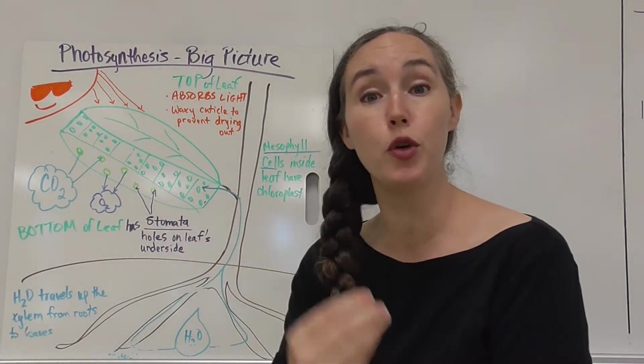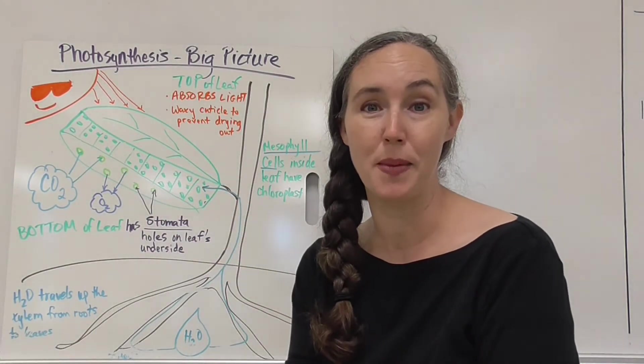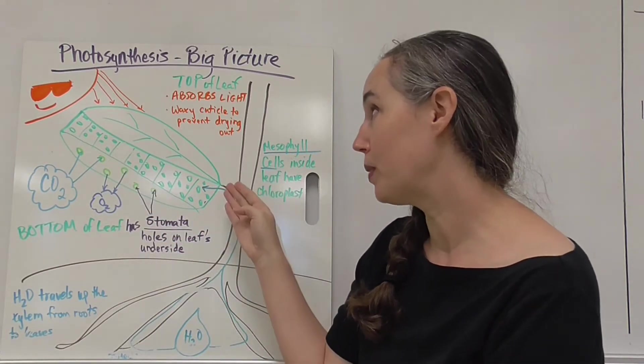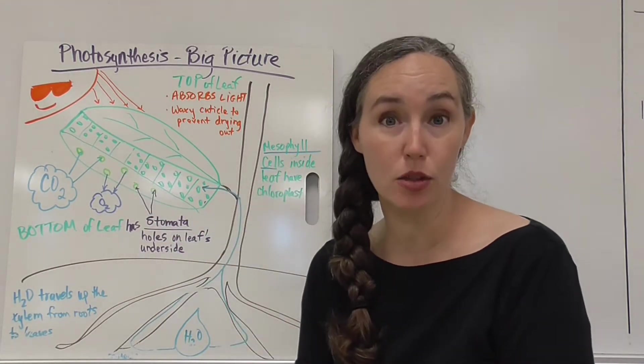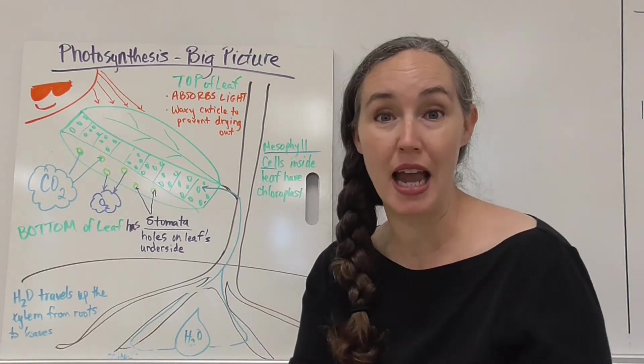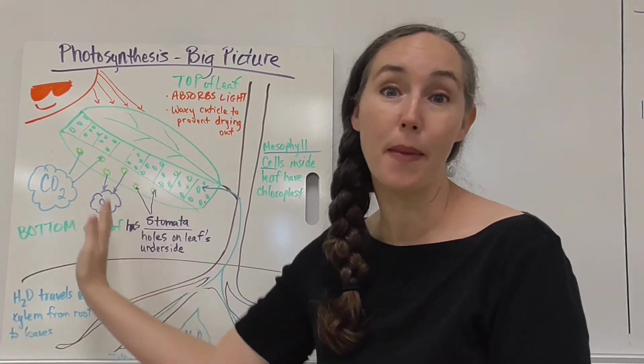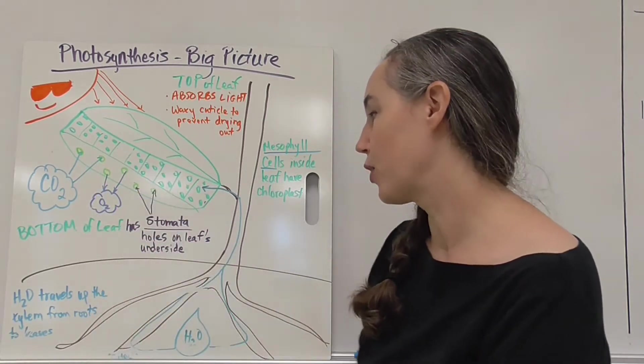Glucose, that's going to be the food, the chemical energy that's being made, is going to be made in the chloroplasts, and then the waste product is actually oxygen gas. The chloroplasts are going to release that and it's going to come out of the stomata from the leaves.